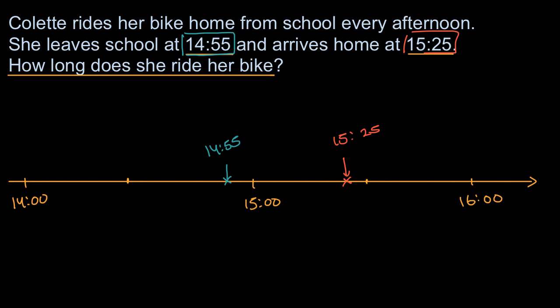The way I think about it is, if we go from 14:55 to 15:00, that is five minutes. And then to go from 15:00 to 15:25, that's another 25 minutes. So the total length of her trip is five minutes plus 25 minutes. Five plus 25 is 30 minutes. And we are done.